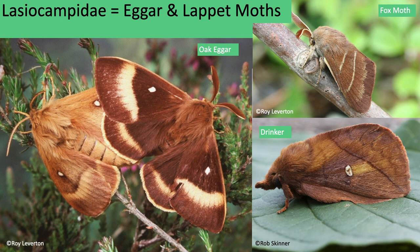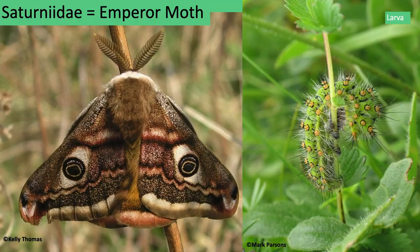Egger and lasiocampid moths — ten resident species and one occasional migrant. They are thick-set, medium-sized to large moths with deep, rounded, usually warm brown or yellowish wings, generally bearing a small central spot or two cross lines on the forewings. Males have really broadly feathered antennae and can detect the scent of unmated females from several hundred metres. The oak egger and the fox moth can be seen during the day.